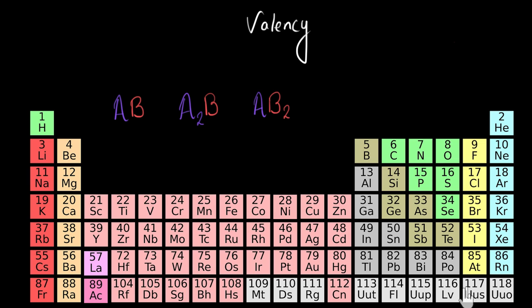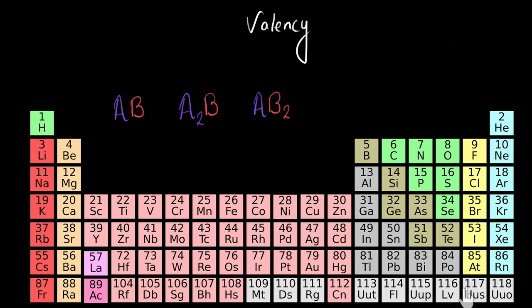Well, there are 118 elements in the periodic table. How are we going to remember all the valencies? That's where in this video we are going to explore if there is a trend of valency across the periodic table — meaning, wouldn't it be nice if all the elements in a period had the same valency? In that case, we will not have to remember or calculate the valency of each and every element. So let's begin.